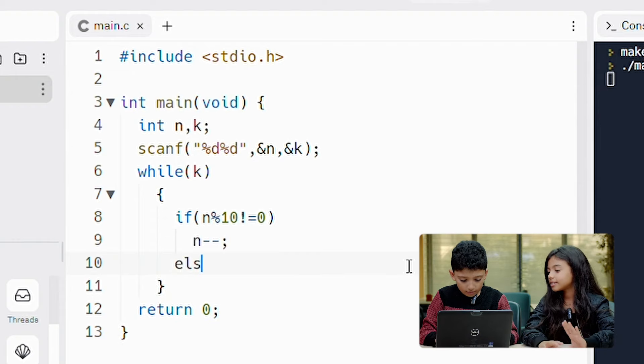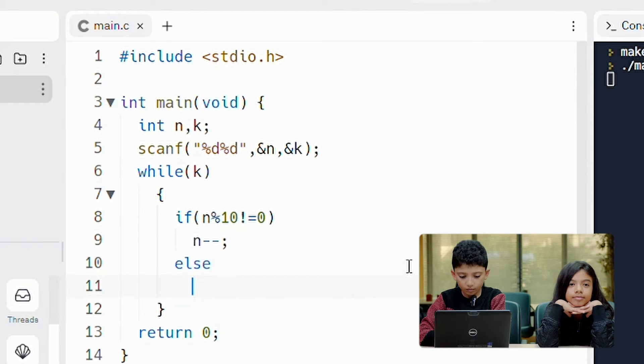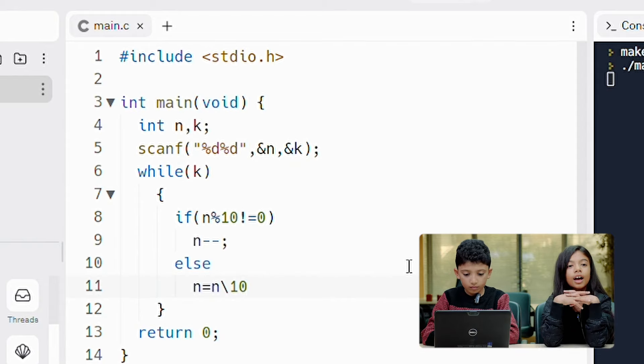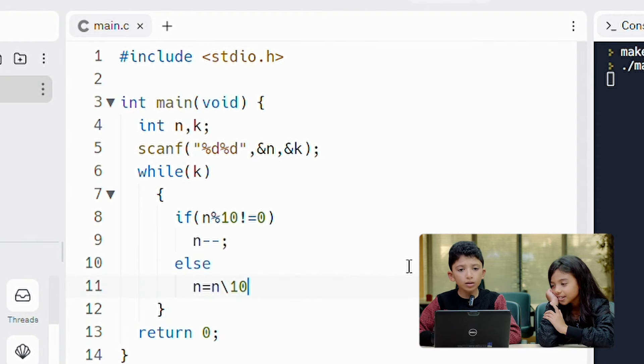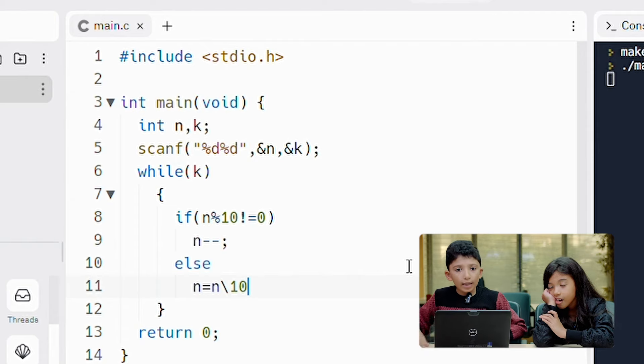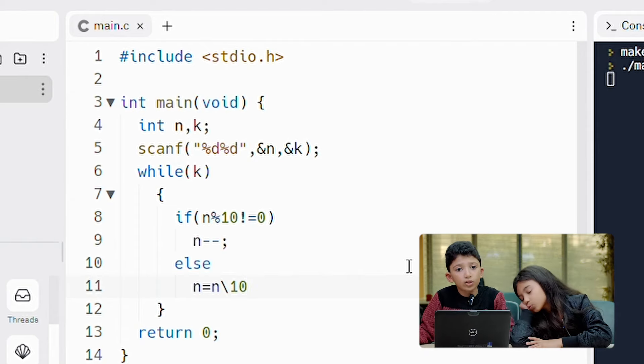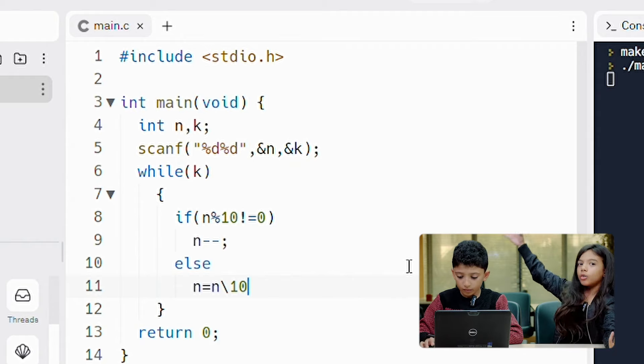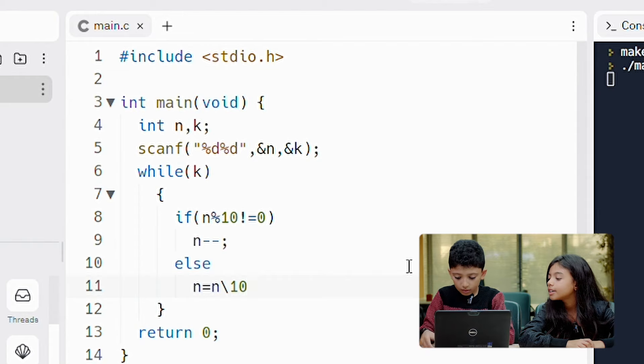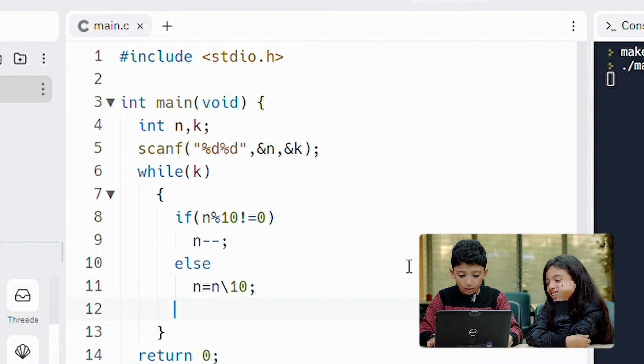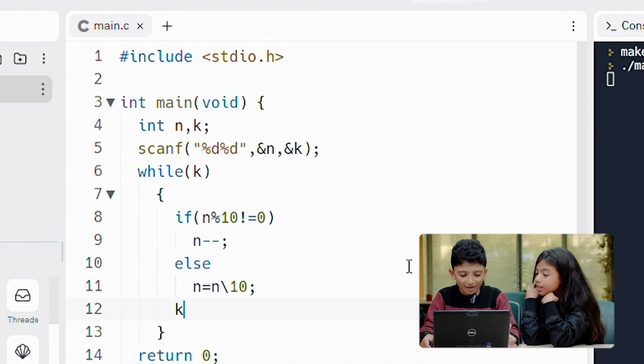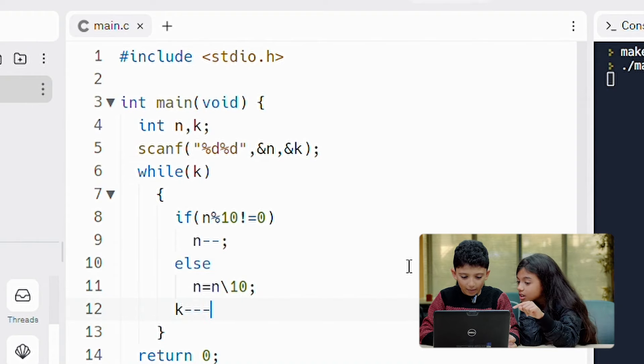Now we're gonna do else. We said else, anything else, right? Yes. What does anything else mean in this situation? The last number is zero. You'll divide by ten. Then we'll do n divided by ten. And then we'll make k minus minus. K minus minus, k minus 1 until k becomes zero.